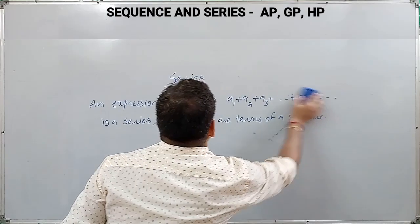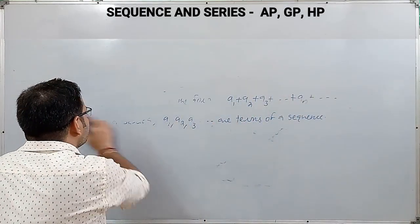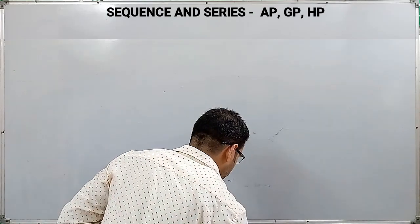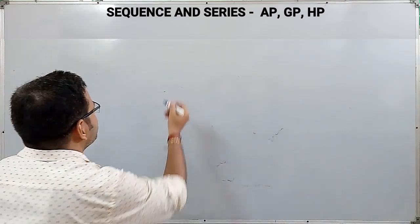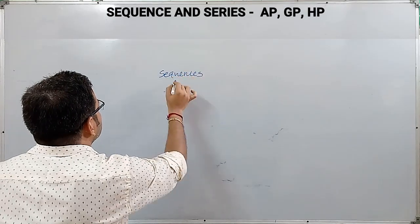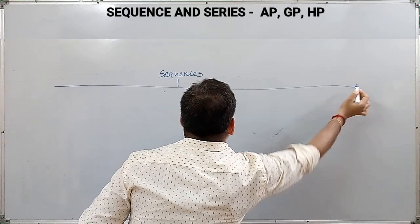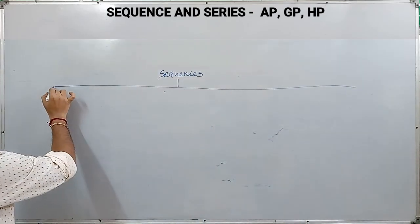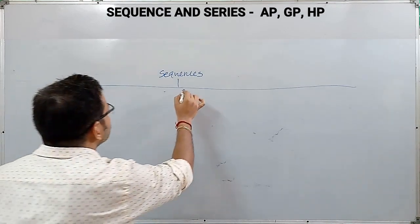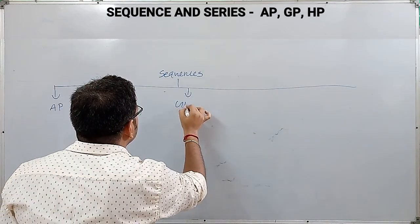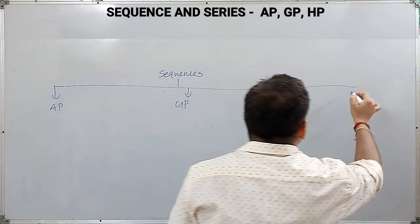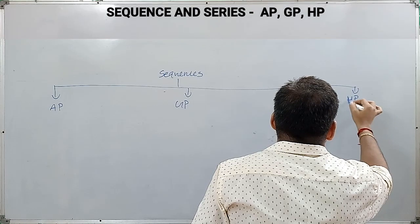The major areas under this chapter — sequences and series — are divided into three: first, Arithmetic Progression (AP); second, Geometric Progression (GP); and third, Harmonic Progression (HP).